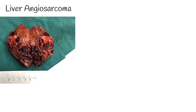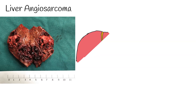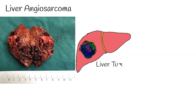Liver angiosarcoma is a rare but highly fatal tumor of the liver. It arises from liver blood vessels and is the third most common primary liver cancer, meaning it originates directly from the liver.